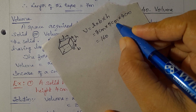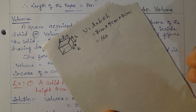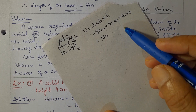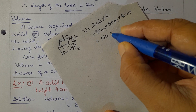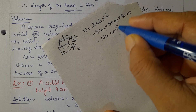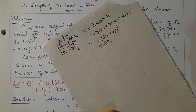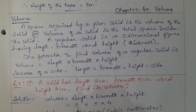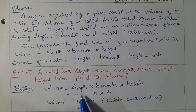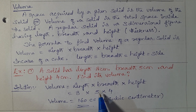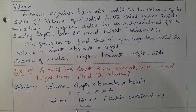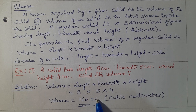The unit: cm × cm = cm², and cm² × cm = cm³. So, the volume of the solid is 160 cm³. That is, Volume = 8 cm × 5 cm × 4 cm = 160 cubic centimetres.